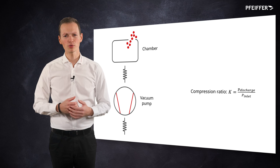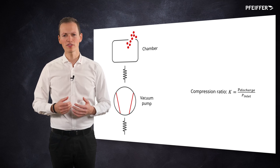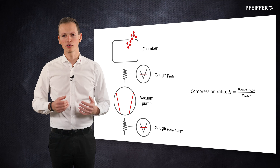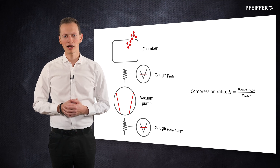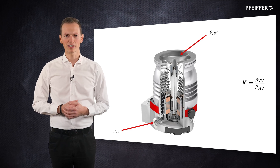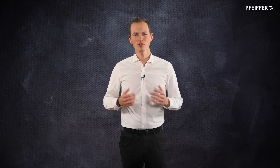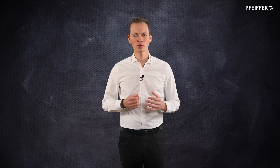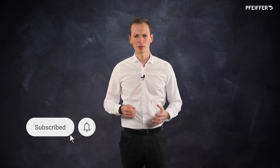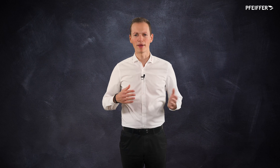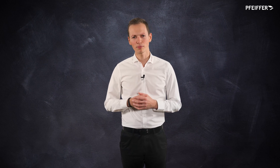A compression ratio is the ratio of a discharge pressure to intake pressure of a vacuum pump. For turbo molecular pumps in particular, it is the ratio of the pressure measured at the fore vacuum flange to the pressure measured on the high vacuum flange. The compression ratio of a turbo pump is measured in practice by increasing the backing pressure through gradually introducing a gas into the fore vacuum line while measuring the resulting high vacuum pressure.